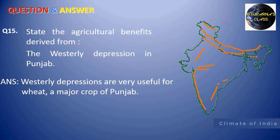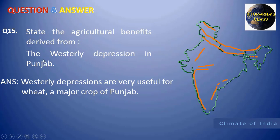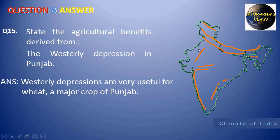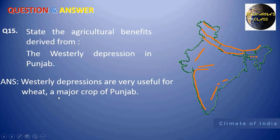Next: state the agricultural benefits derived from westerly depressions in Punjab. During winter, only the northwestern portion of India receives rainfall, from the Mediterranean Sea via western disturbances. This rainfall is very helpful for the cultivation of wheat, which is a major crop in Punjab.